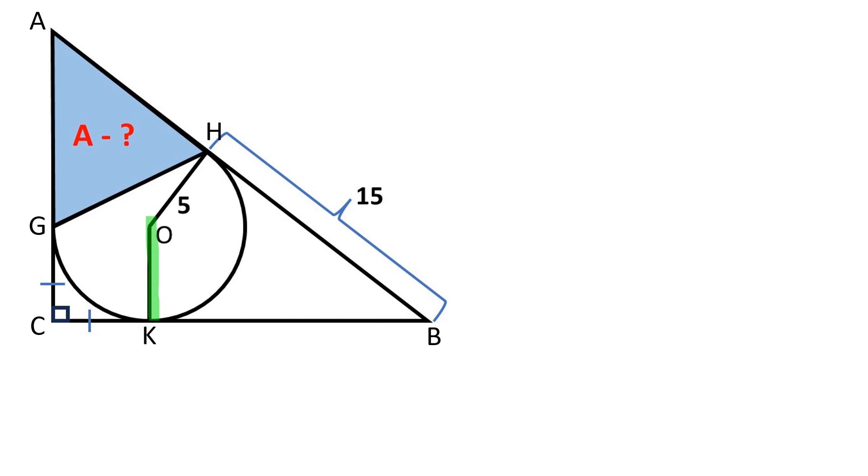Let's draw the radius to the side BC. Angle OKC is a right angle because the radius of a circle is perpendicular to the tangent line through its endpoint on the circle's circumference.